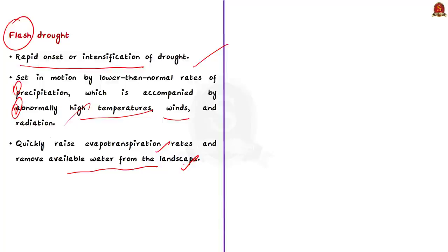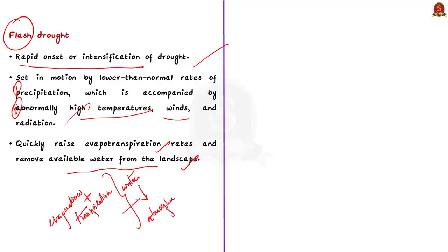Evaporation occurs with water bodies and transpiration generally occurs with plants. Evapotranspiration is the combined process by which water is transferred from land to atmosphere through both evaporation and transpiration from plants. This evapotranspiration further lowers soil moisture, which decreases rapidly as drought conditions continue. Simply put, flash drought is a type of drought that comes or intensifies in a very short span of time but has a long-lasting impact.